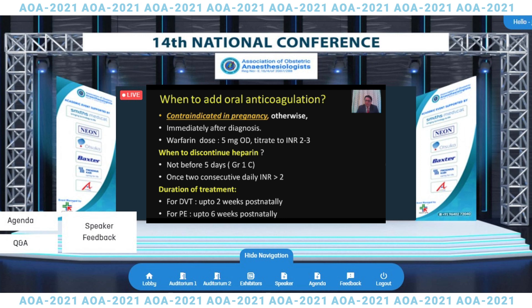When to add oral anticoagulation? In pregnancy these are contraindicated, but in non-pregnant patients warfarin or newer oral anticoagulants can be used. There is a typical overlap with heparin for four to five days because warfarin affects protein C and protein S, and to balance the procoagulant state heparin is continued. Heparin is discontinued after four or five days once the INR is in the acceptable range of greater than 2. Duration of treatment is typically through the antepartum period and up to two weeks postnatally for DVT. For pulmonary embolism, anticoagulation continues for six weeks postnatally.